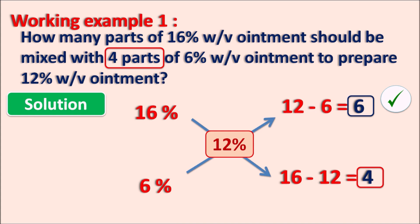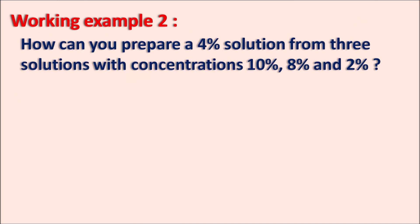Using allegation alternate we can identify the mixing ratio of two different concentrations. But what happens when we have more than two solutions? Suppose we have three solutions and mix all three to get one final solution. Working example 2: How can you prepare a 4% solution from three solutions with concentrations 10%, 8%, and 2%?